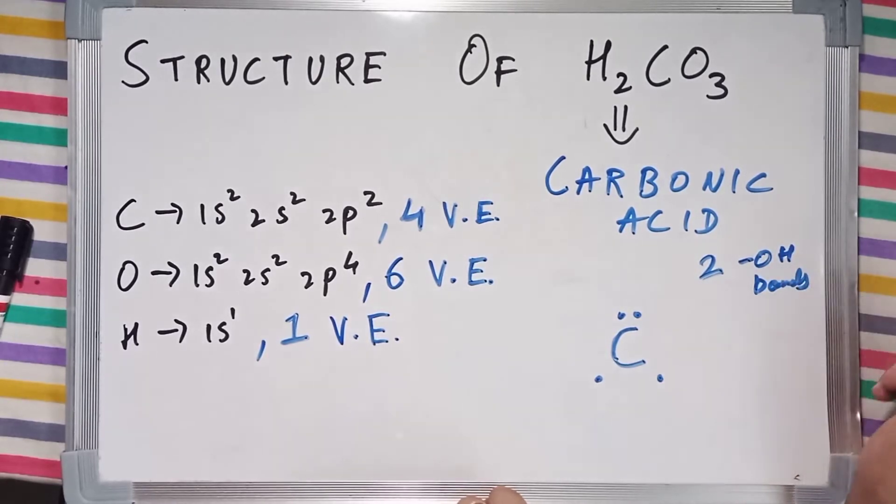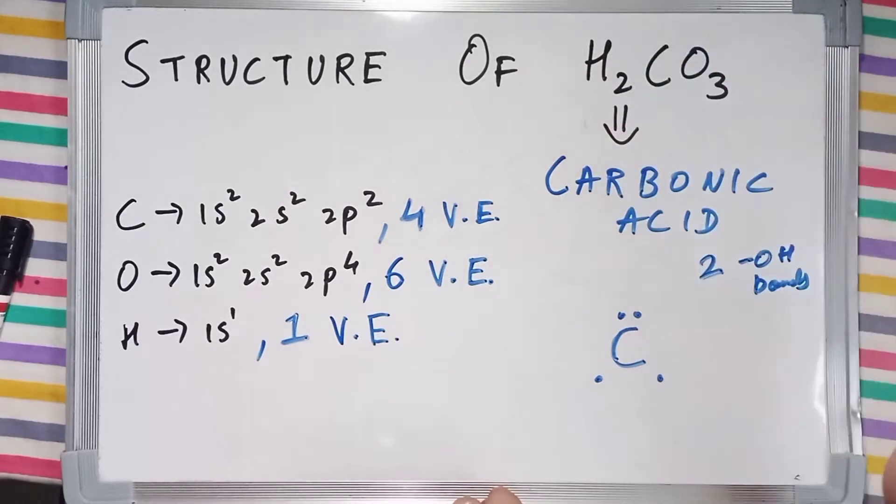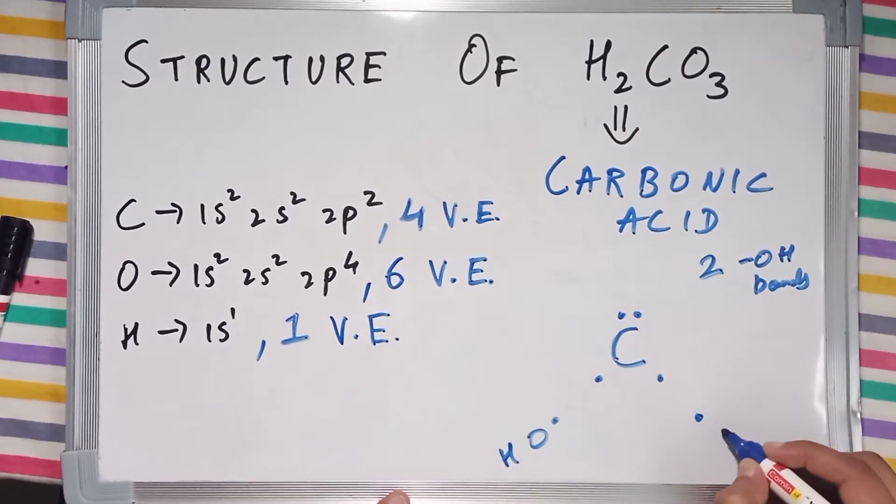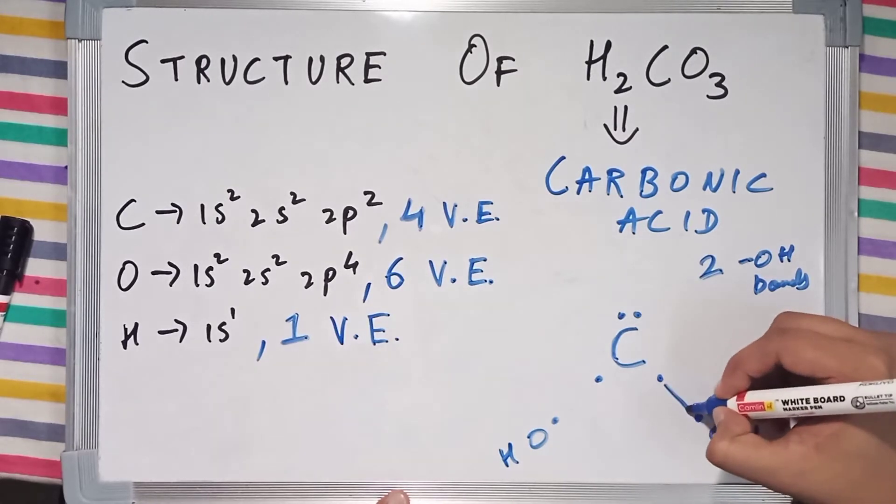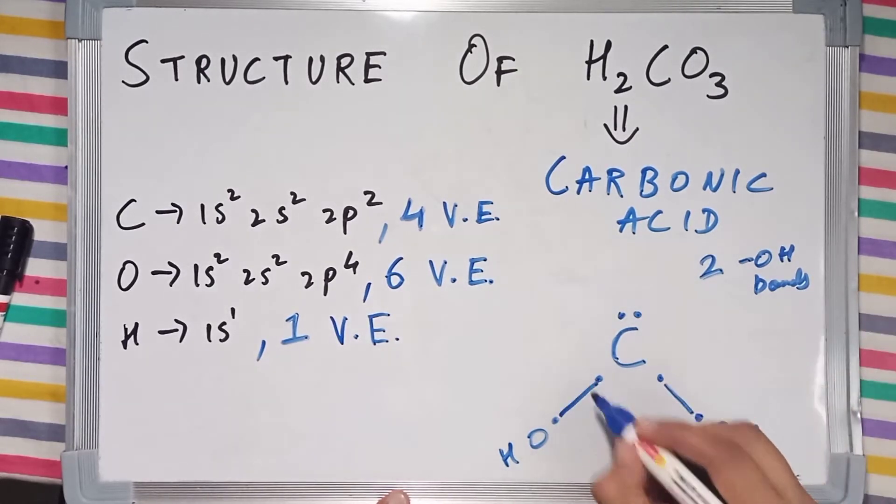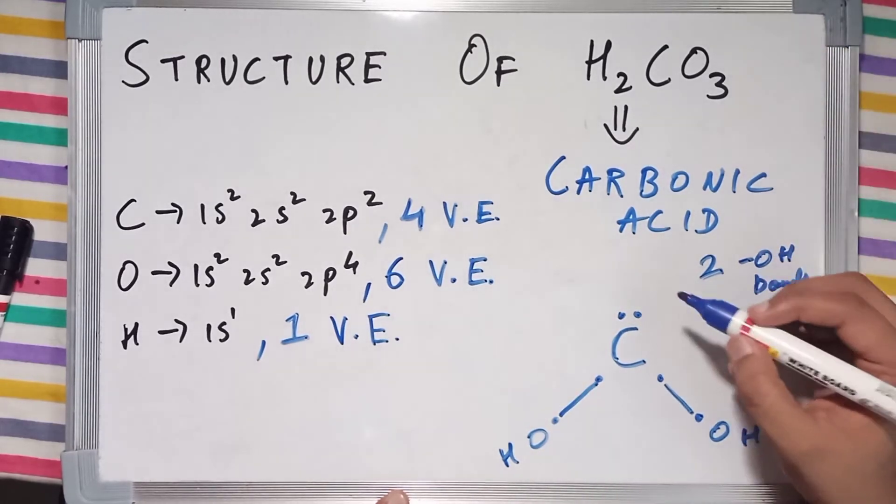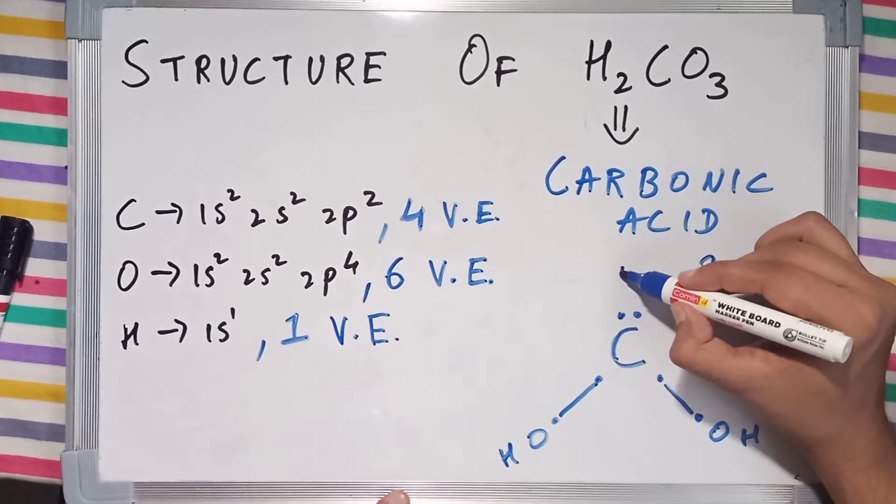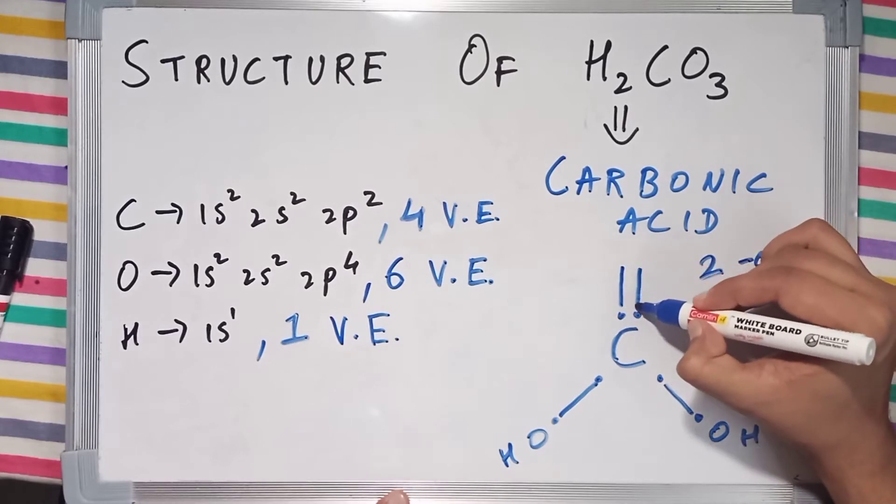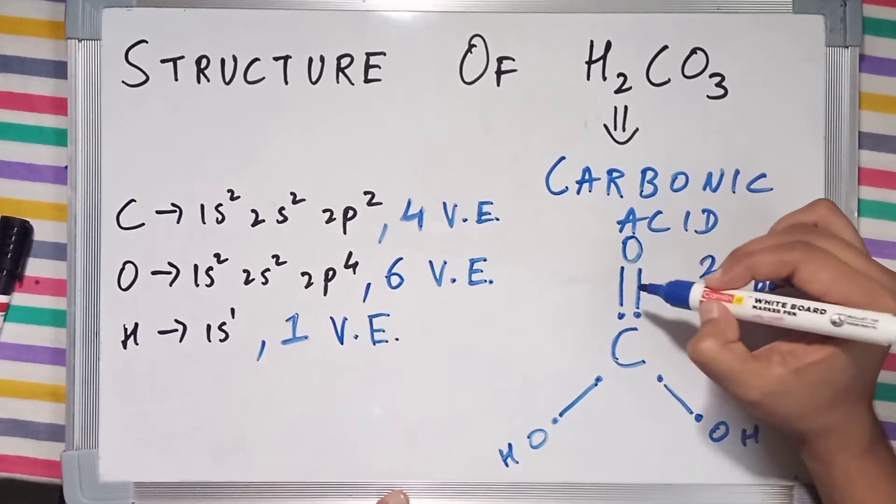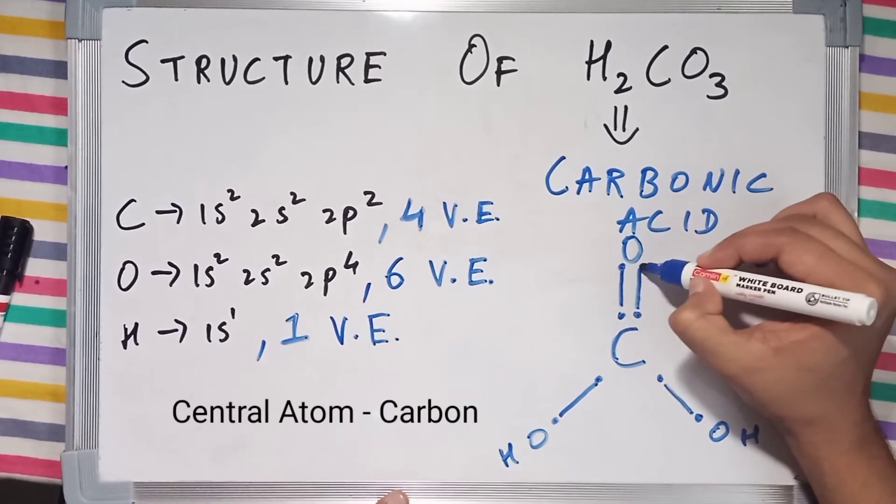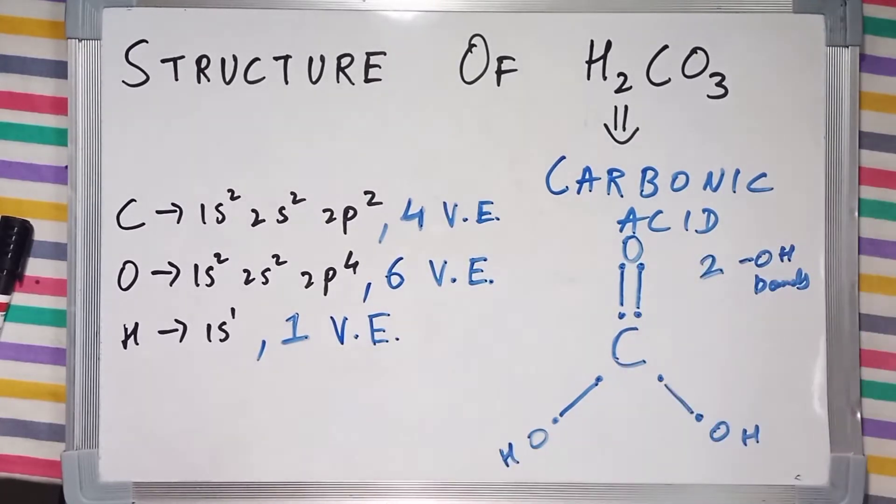Two OH bonds in H2CO3. So the first OH bond and the second OH bond. Now we are just left with a single atom of oxygen which will make a double bond with the central carbon, with oxygen donating its 2 electrons.